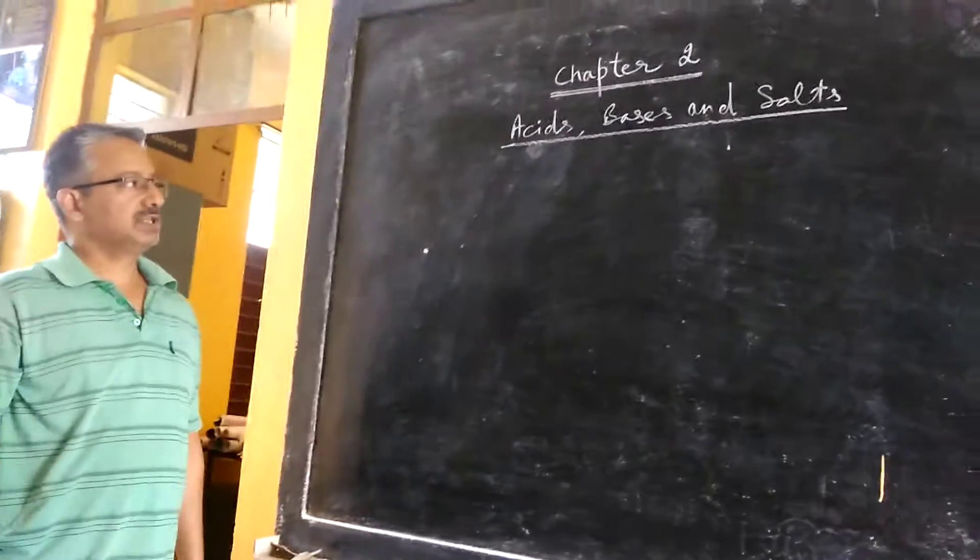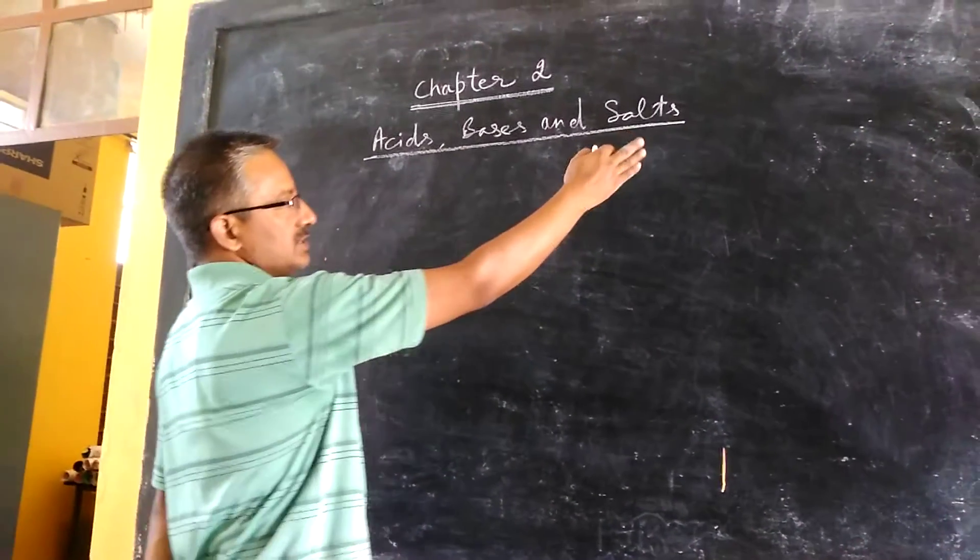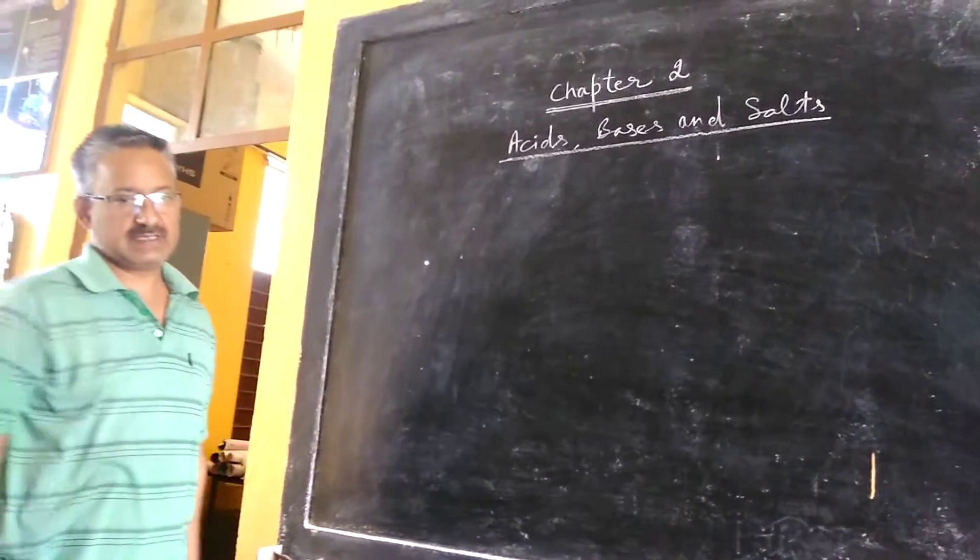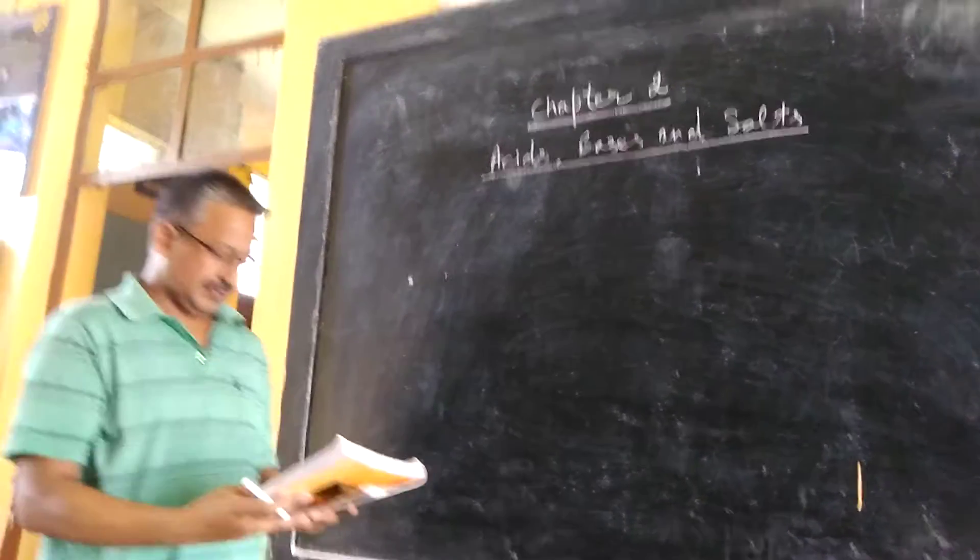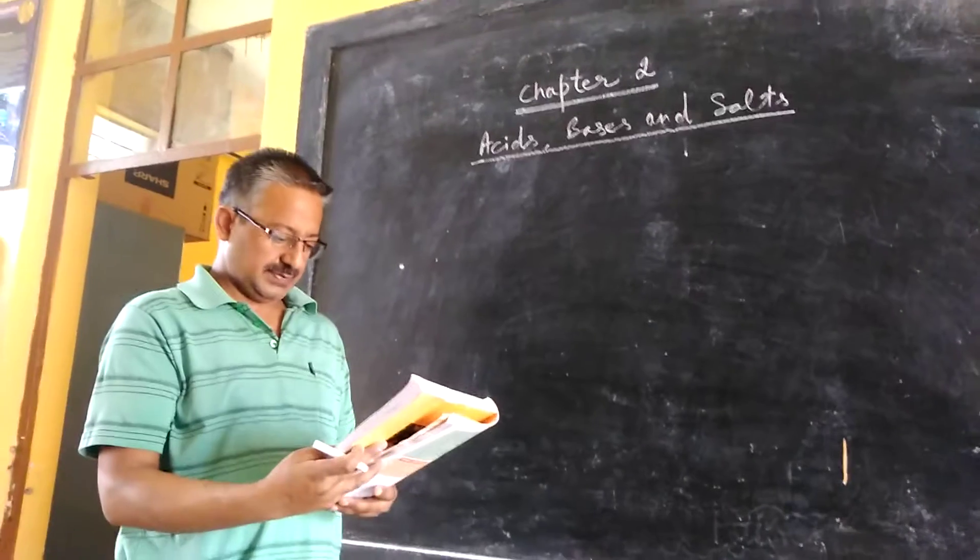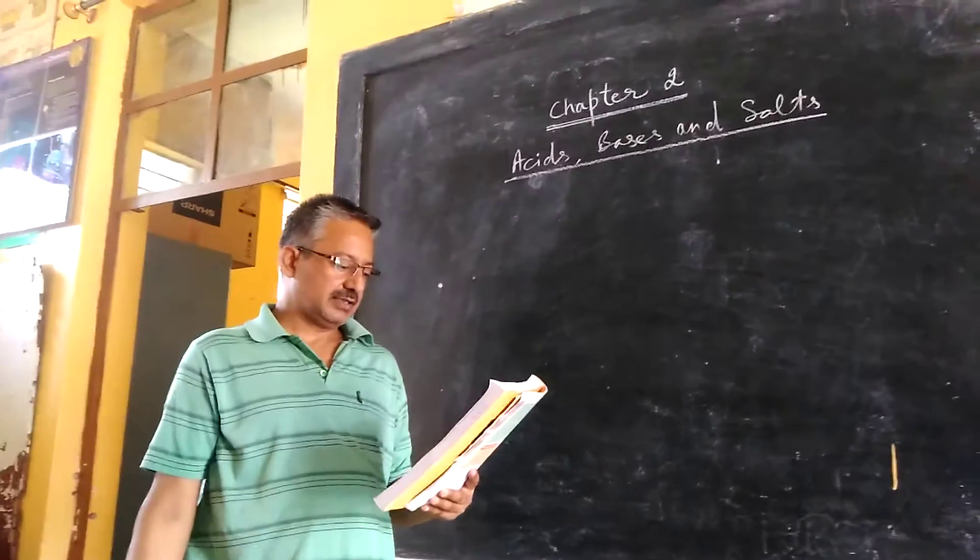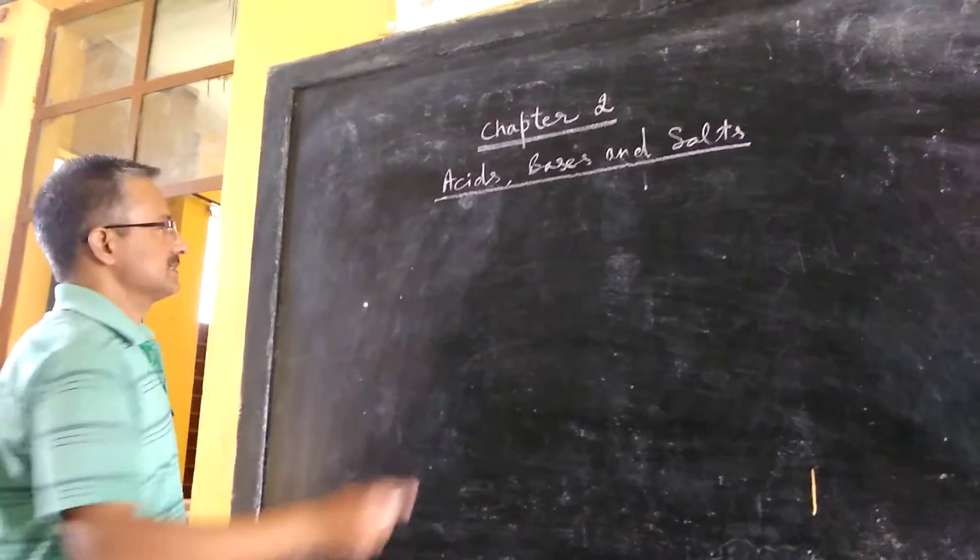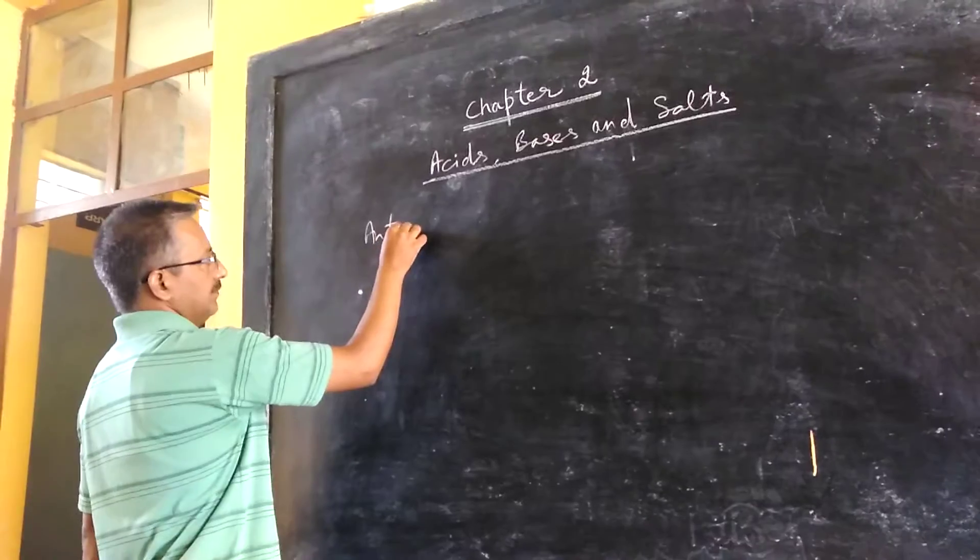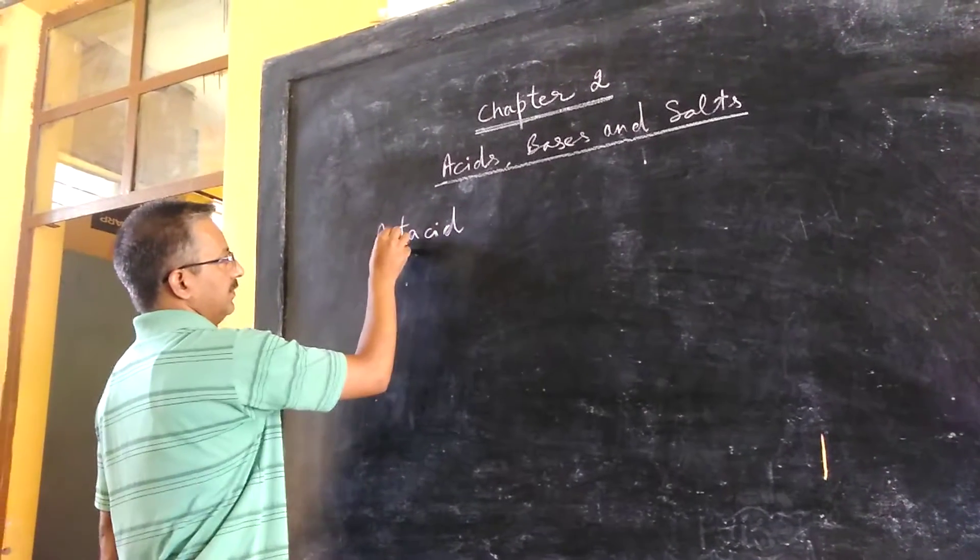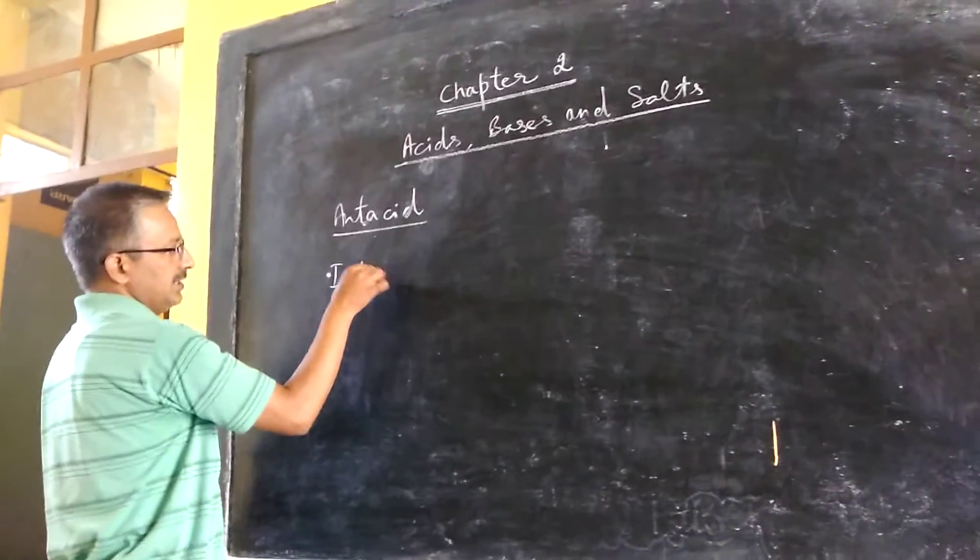So in this chapter we are going to discuss the properties of acids, bases and salts, and what is the difference between these three. So in the very first page of this chapter, two things are there which are to be learnt.